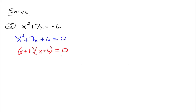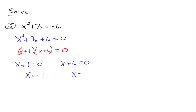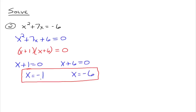Now we have a product equal to zero, so we set each factor equal to zero: x plus 1 equals zero and x plus 6 equals zero. We get two solutions: x equals negative 1 and x equals negative 6. If you take negative 1 or negative 6 and substitute for x in the original equation, you'll get a true statement. You should verify that.